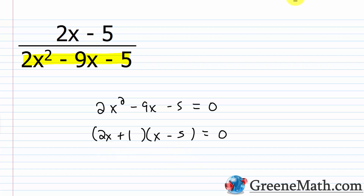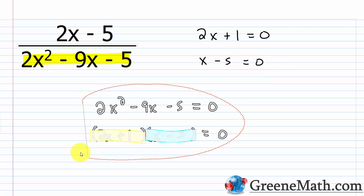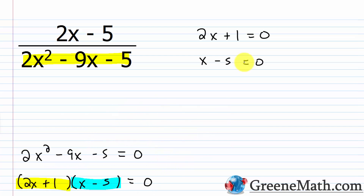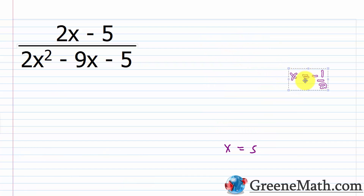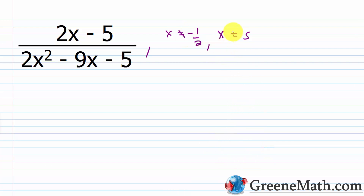Now I set each factor equal to 0: (2x + 1) = 0 and (x − 5) = 0. For 2x + 1 = 0, subtract 1 from both sides to get 2x = −1, then divide by 2 to get x = −1/2. For x − 5 = 0, add 5 to each side to get x = 5. So we have x does not equal −1/2 and x does not equal 5.